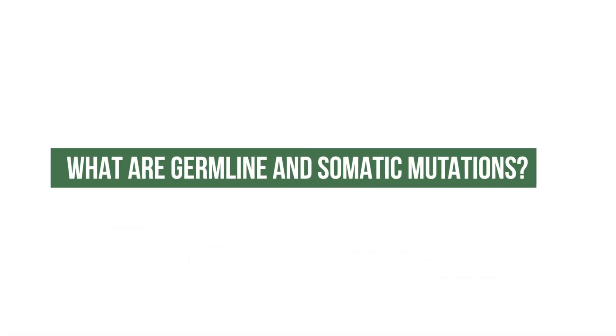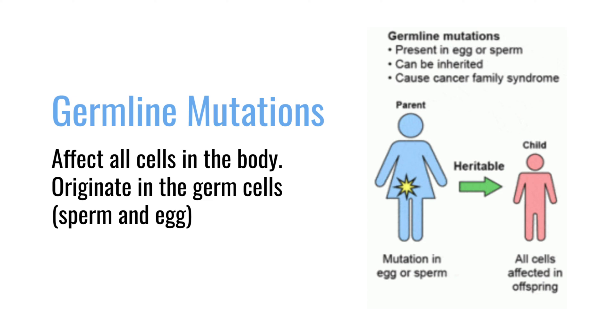What are germline and somatic mutations? A germline mutation is a mutation that affects probably every cell in the body, including your germ cells. Your germ cells are the egg and the sperm. What that means is a germline mutation is a change that will now be passed on to the next generation — it will be inherited.